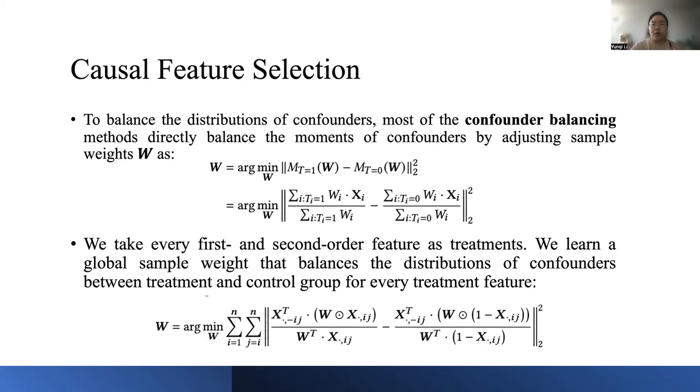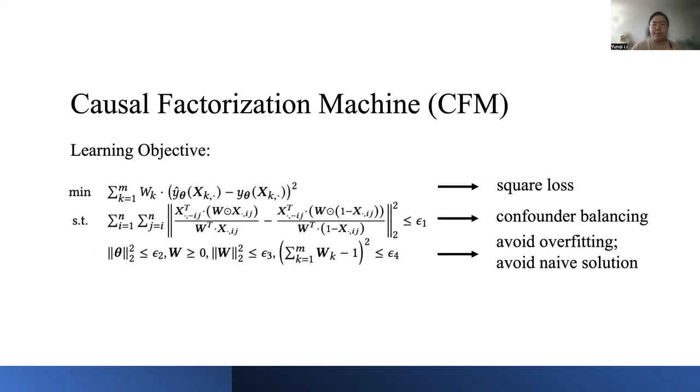As there is usually no prior knowledge of the causal structure of input variables in FMs, we have to treat every feature as a treatment variable and estimate its causal effect on the outcome. When we treat one feature as treatment, the other features are considered as confounders. We need to learn a global sample weight that balances the distributions of confounders between treatment and control group for every treatment feature. The global sample weight is learned by the second equation.